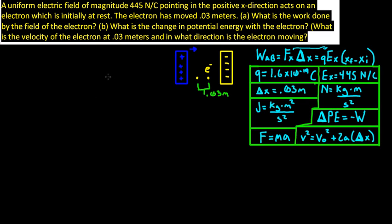Today we're talking about electric fields. In this problem, a uniform electric field of magnitude 445 newtons per coulomb pointing in the positive x direction acts on an electron which is initially at rest. The electron has moved 0.03 meters. What is the work done by the electric field on the electron? What is the change in potential energy of the electron? What is the velocity of the electron at 0.03 meters, and in what direction is it moving?